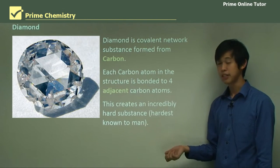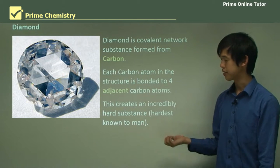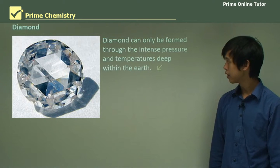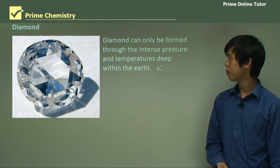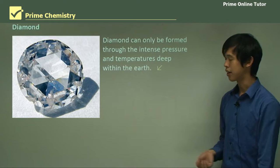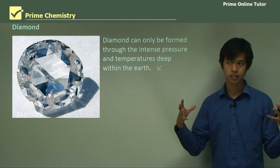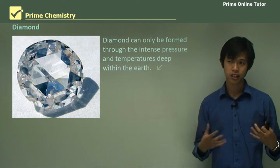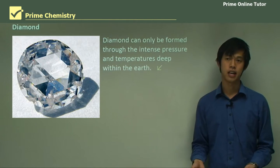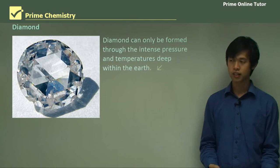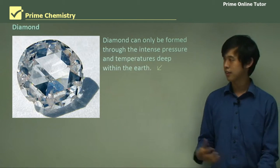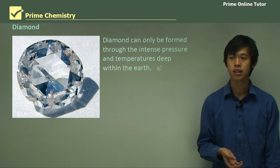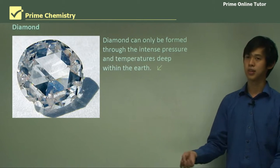This creates an incredibly hard substance, and it happens to be the hardest substance known to man. That's diamond for you. And diamond can only be formed through the intense pressures and temperatures deep within the Earth. We can't form diamond artificially. It only happens naturally. Though there is some work being done where we have formed some artificial diamonds, but they're not as good quality as the ones that we dig out of the Earth.